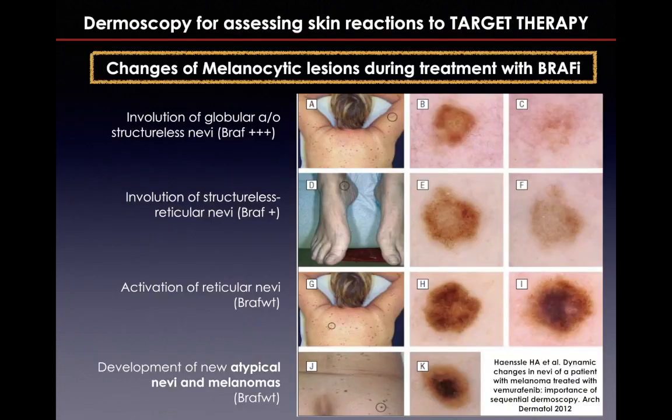Here we have an example of dynamic changes of pre-existing melanocytic nevi during BRAF inhibitor vemurafenib therapy, documented by sequential digital dermoscopy. The authors reported a variety of dermoscopic changes, including evolution of nevi — most of them with a globular pattern — and activation of reticular nevi with development of atypical features, as seen in the last two pictures. Thank you for your attention.